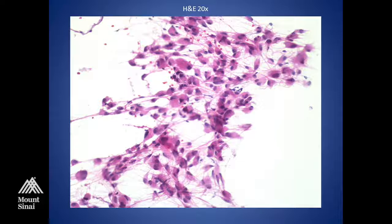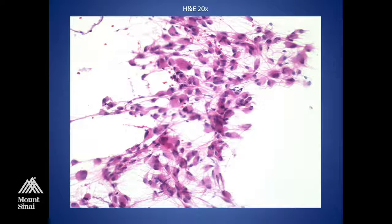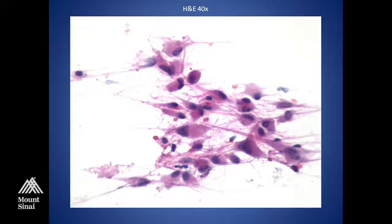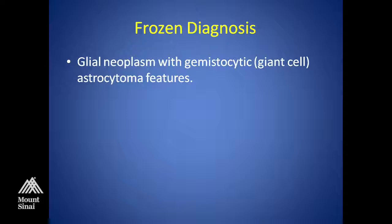These cells do have fibrillary processes. The nuclei are relatively eccentrically located with an abundant amount of cytoplasm and thick fibrillary processes. I like going to areas where there are not many cells so I can really get a good impression of the cytoplasmic border and whether it's a smooth or fibrillary edge. On frozen, this was called a glial neoplasm with gemistocytic giant cell astrocytic features — that's all you really have to say.